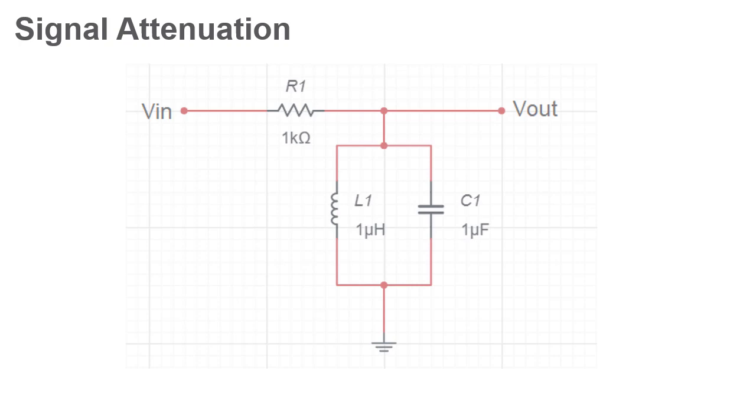The impedance of a parallel LC circuit is maximized at resonant frequency. Of all the signals that pass into the circuit, those that match the resonant frequency are output at a much higher voltage than those higher or lower than the specified frequency.